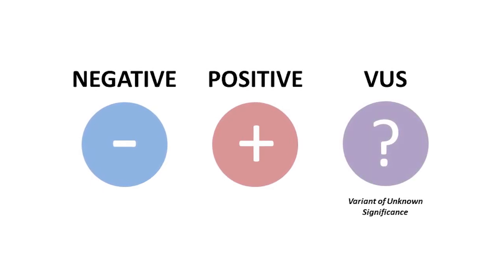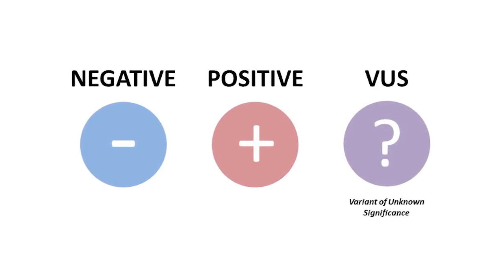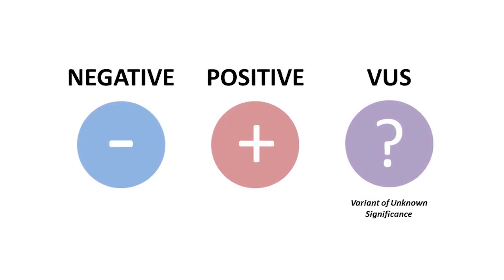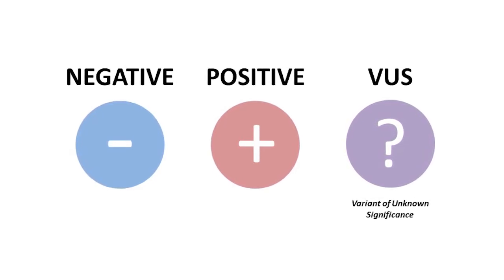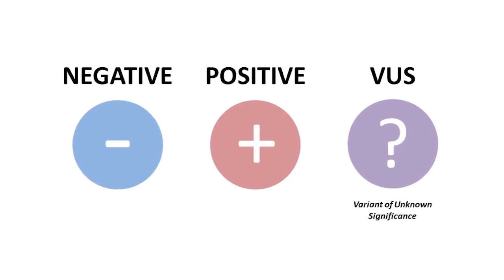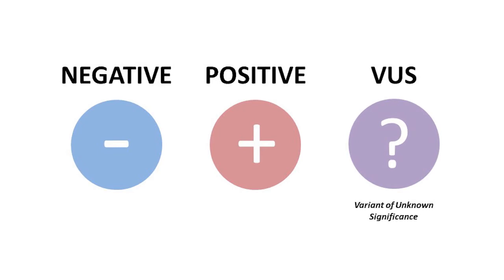The third possible result is called a variant of unknown significance, or VUS. This type of result means that it is unknown whether this difference represents normal variation or if it is expected to cause disease symptoms, so a VUS is not diagnostic.